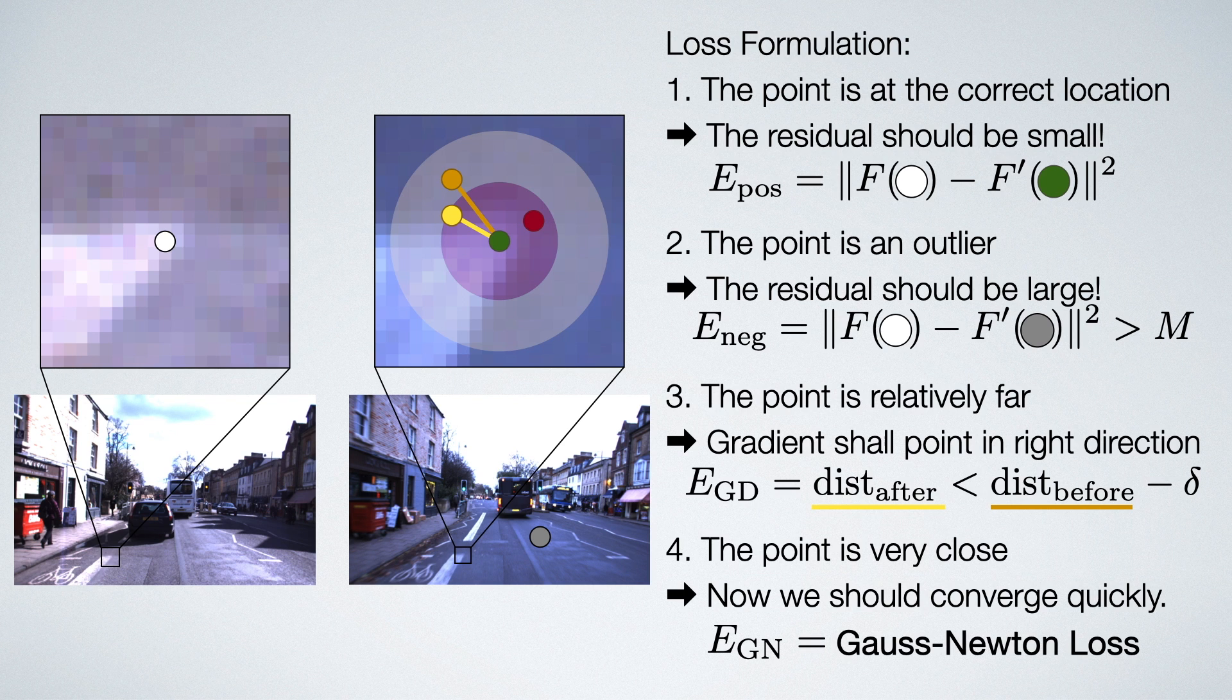which we have proposed in our previous work GNNet. It works directly on the Gaussian probabilities computed by the Gauss-Newton algorithm, which makes it optimal for this use case.